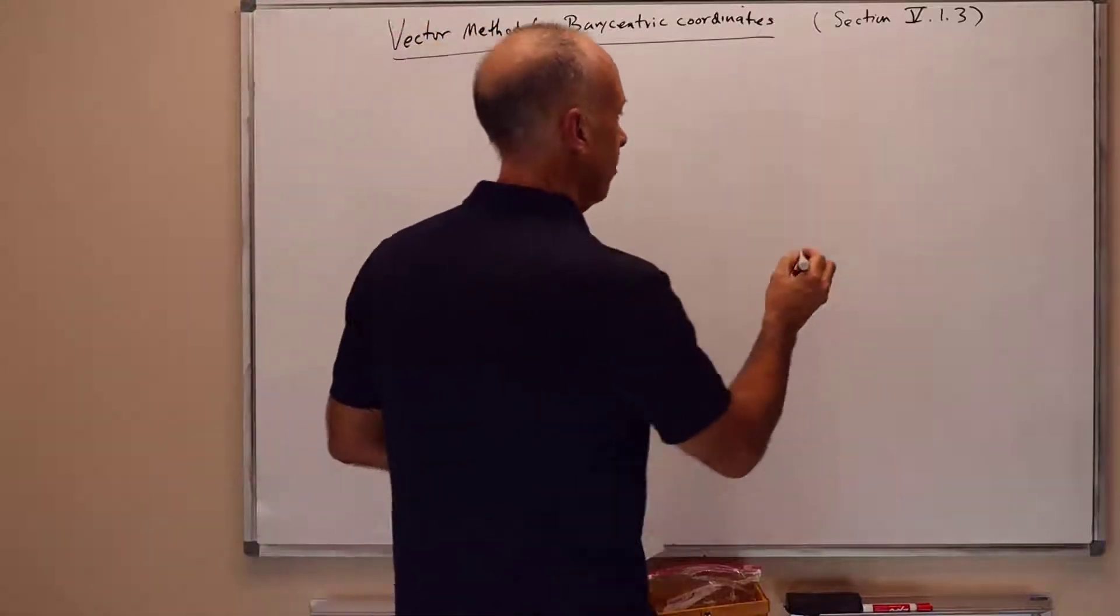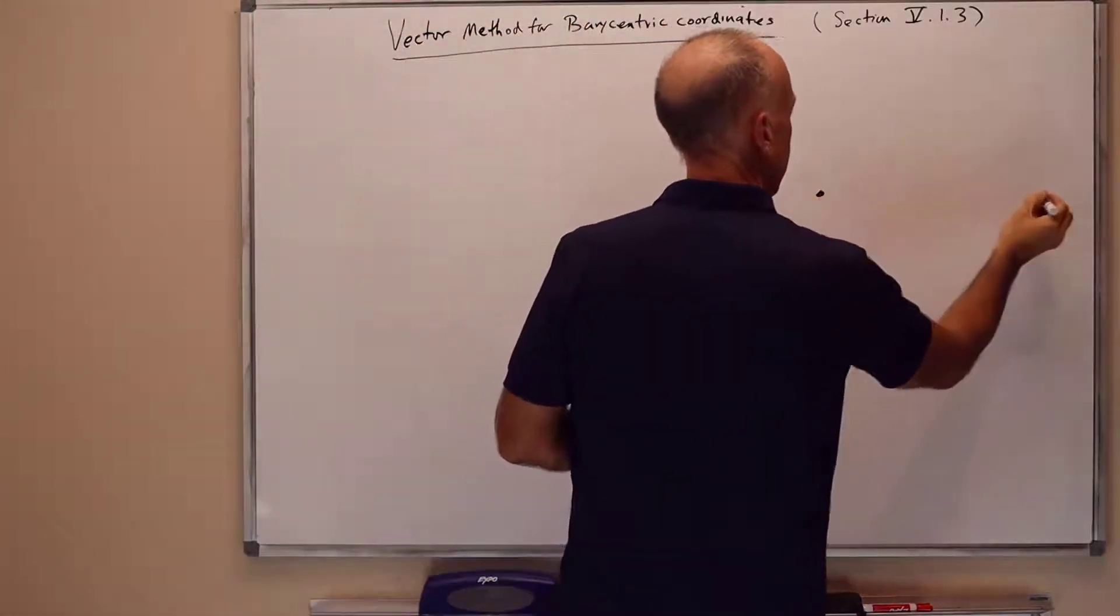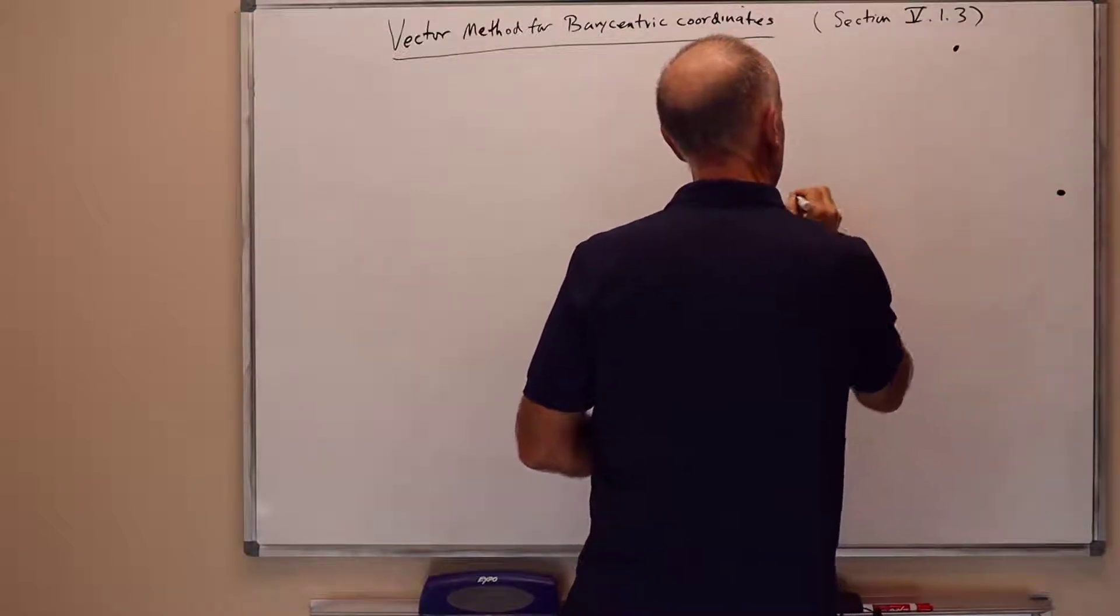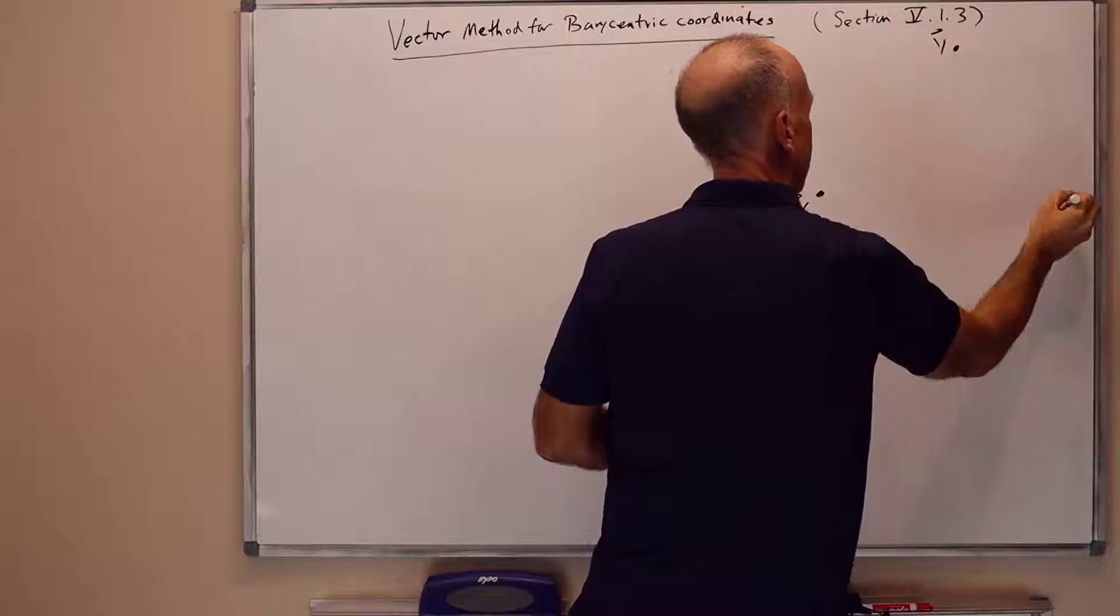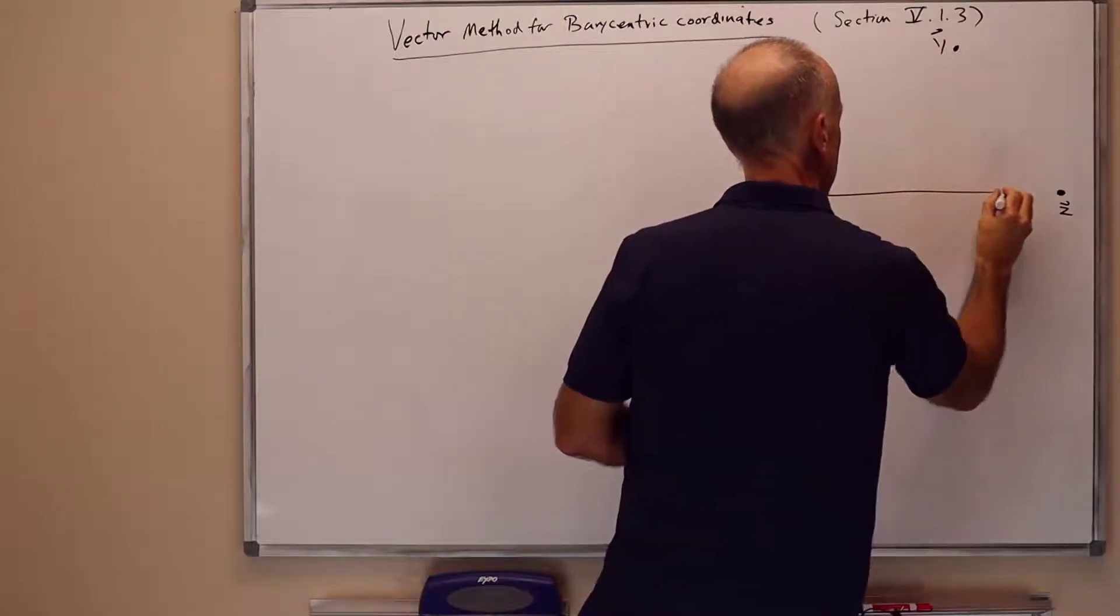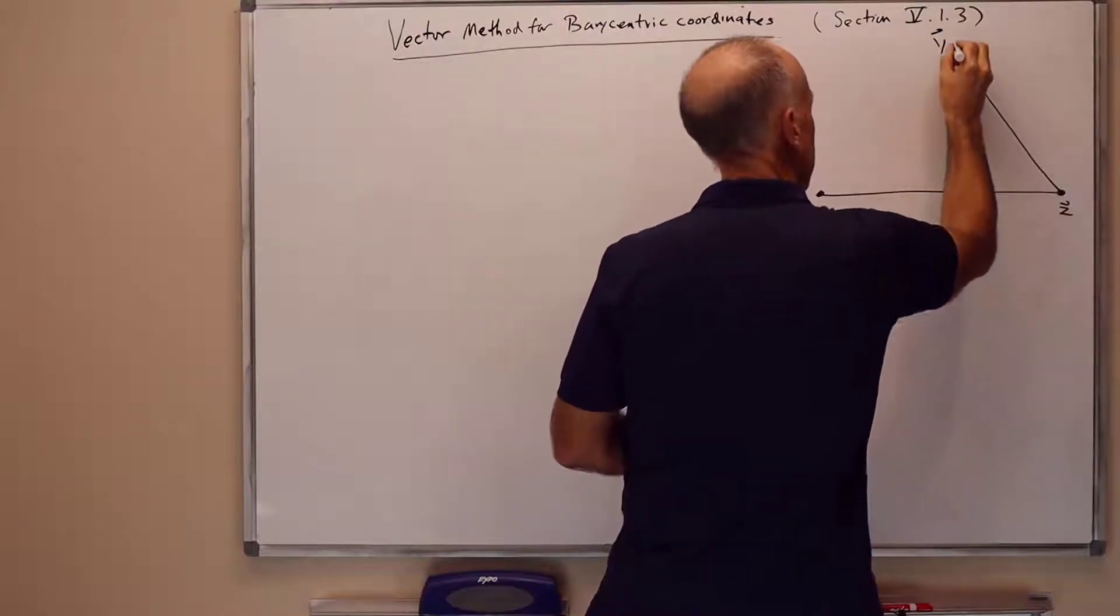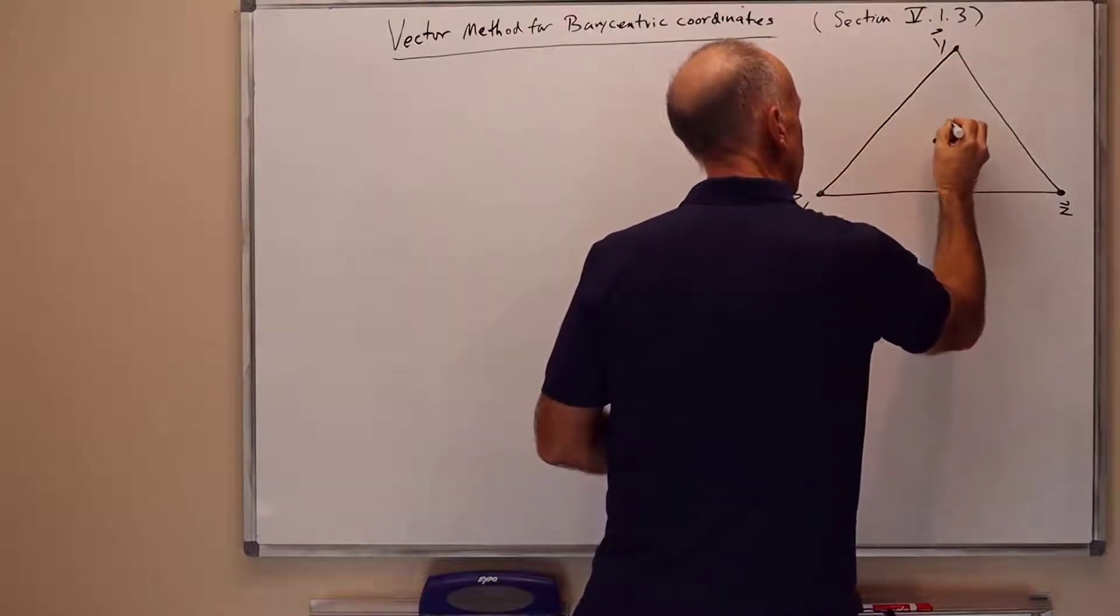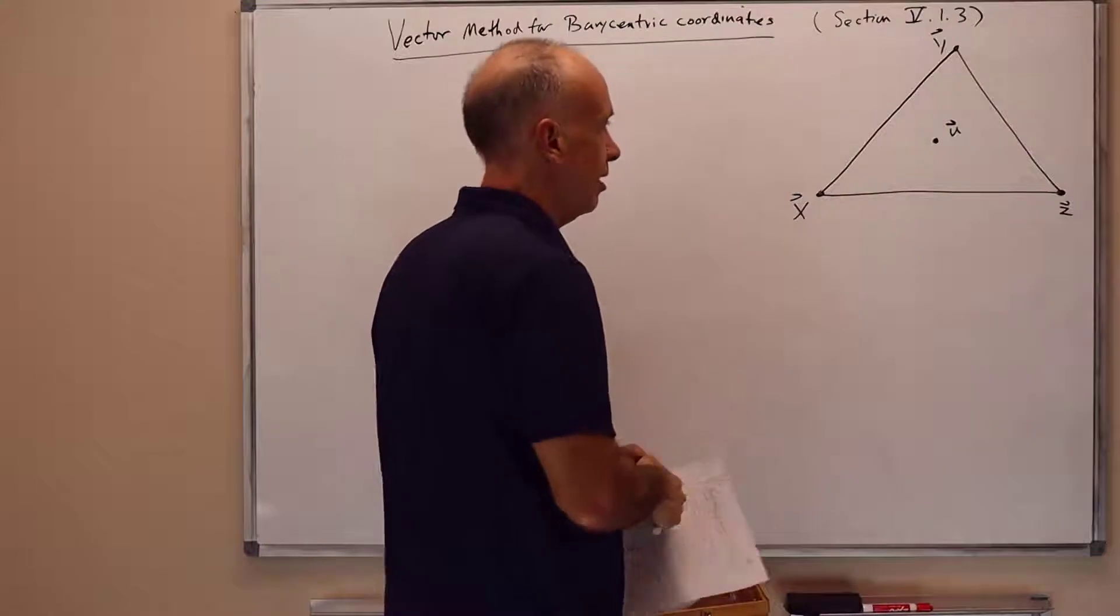So let's draw the picture. We have a triangle with vertices x, y, and z, and a point u, which I'm going to draw u as being inside the triangle.